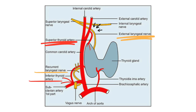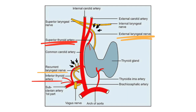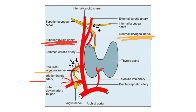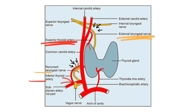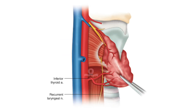The relationship between the recurrent laryngeal nerve and the inferior thyroid artery is also frequently asked, especially in relation to thyroidectomy. Remember: 'N for niche, N for nearer to the gland' — the inferior thyroid artery is in close intimate relation with the recurrent laryngeal nerve nearer to the gland.